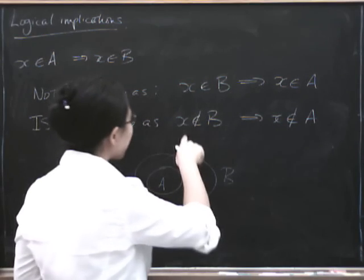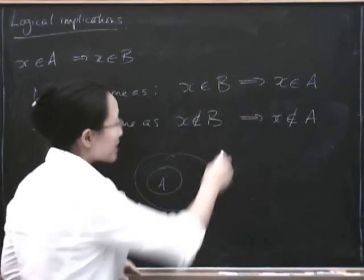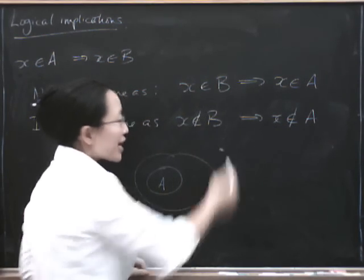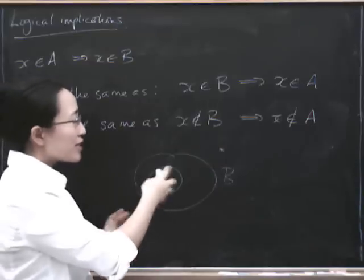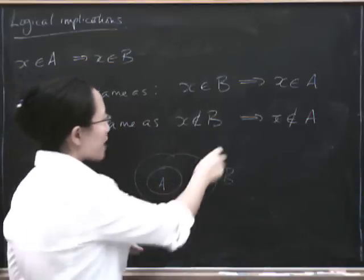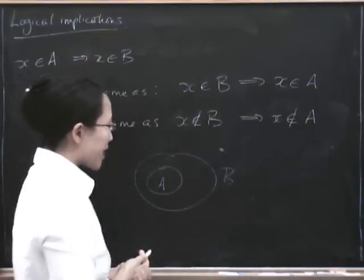So here what we're saying is if X is even outside of B, then it can't possibly be inside A, right? These are saying the same things. If X is outside of B, then it can't possibly be in A. So to have a more concrete example,